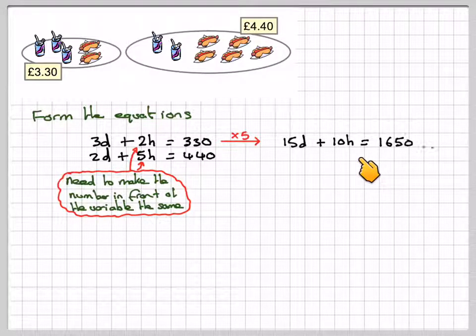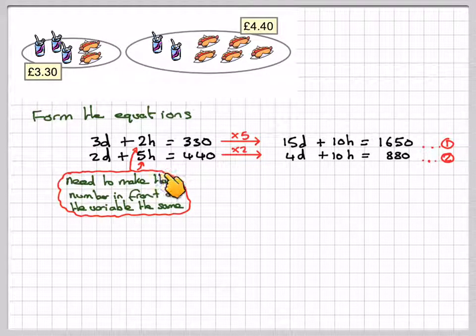three times five is 15D, 10H, and then five times 330 is 1650. We're going to call this row one. And then this one here, I'm going to multiply everything through by two, so it's going to give me 4D plus 10H is equal to 880.